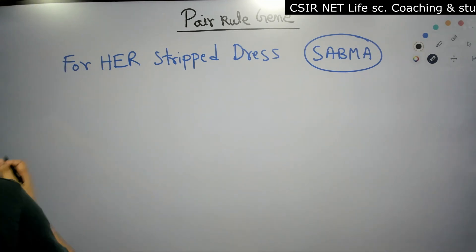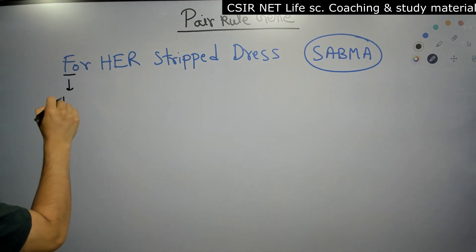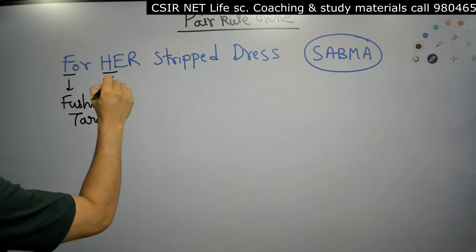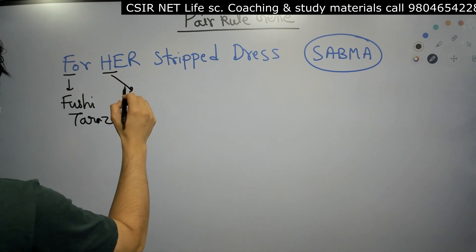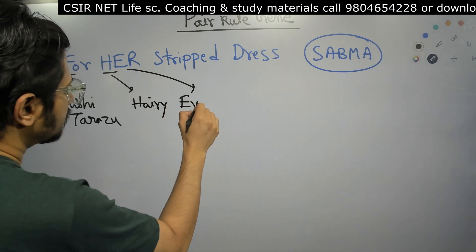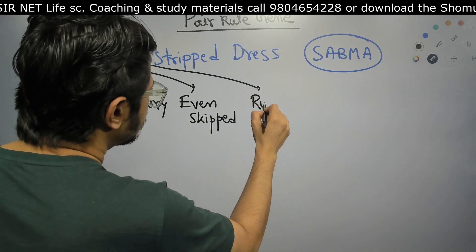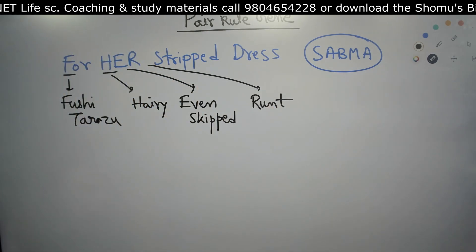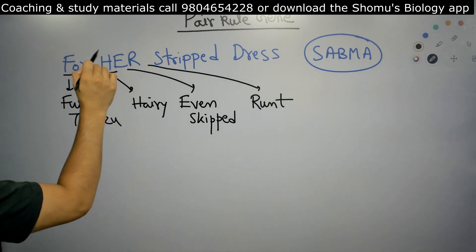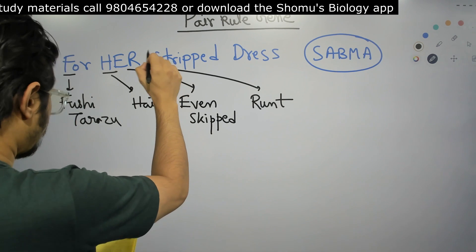The letters encode specific gene names. F stands for Fushi tarazu. Then H-E-R: H is Hairy, E is Even skipped, and R is Runt. These are all the major pair rule genes we know in Drosophila. So 'For Her' gives us F for Fushi tarazu, H for Hairy, E for Even skipped, and R for Runt.